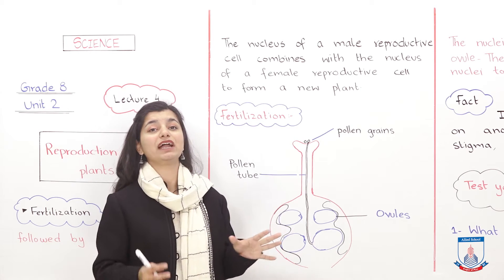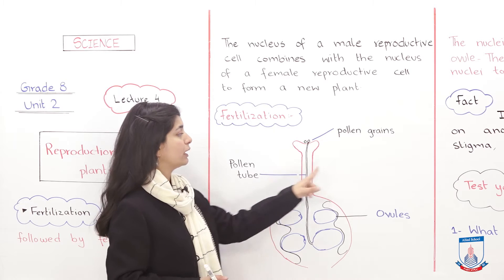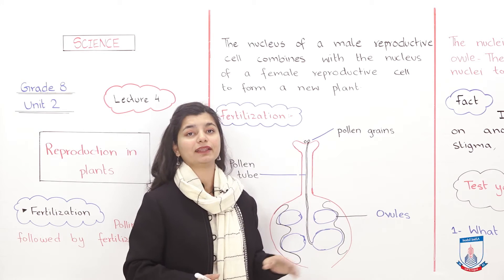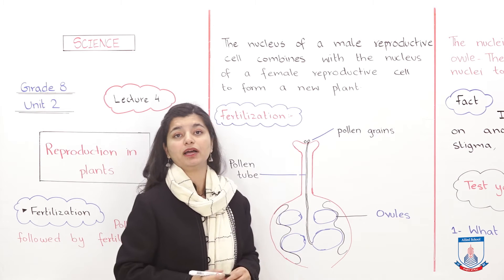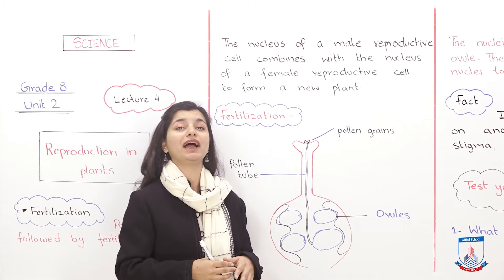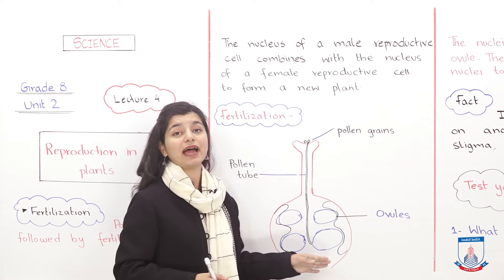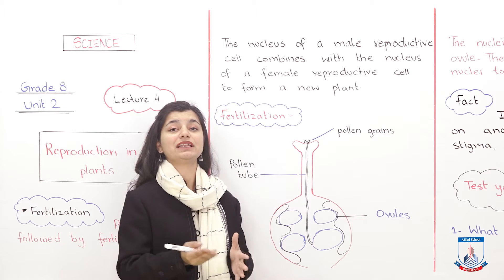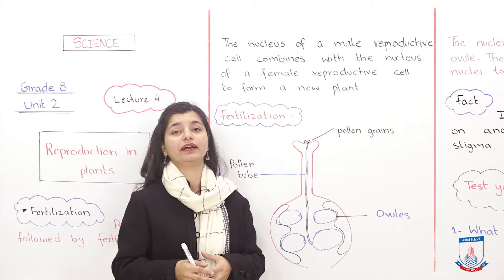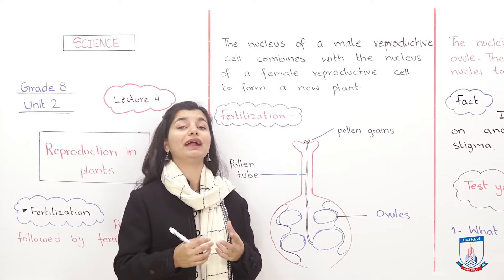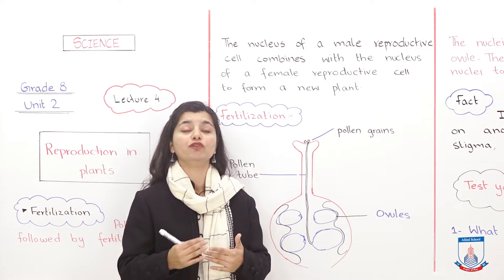In this diagram, we are showing where the pollen grain comes and lands. It comes and lands here on the stigma. When it comes to the stigma, how will it go down the style and then to the ovary? It doesn't go automatically — it makes its own way.